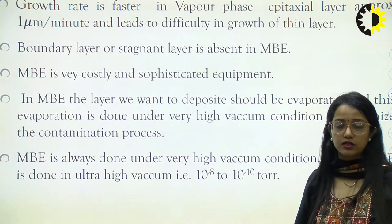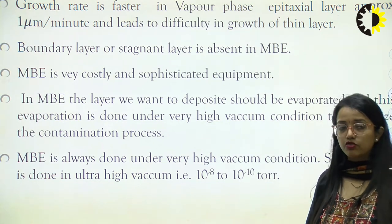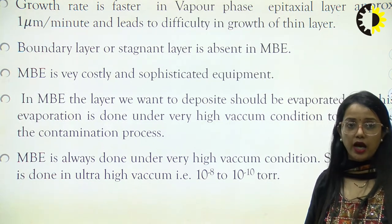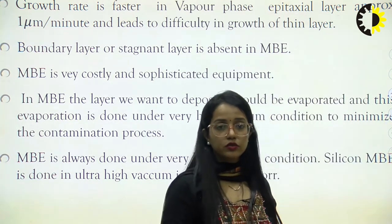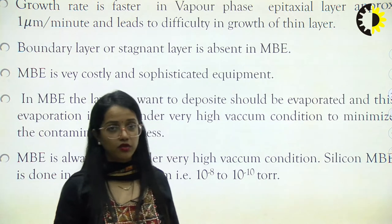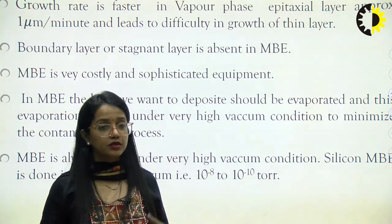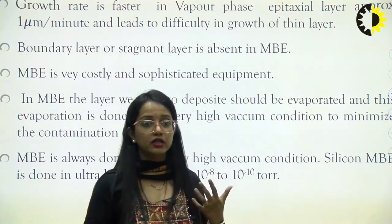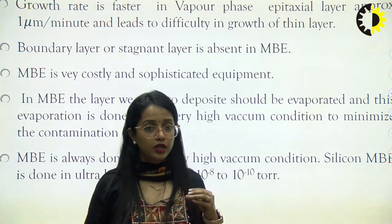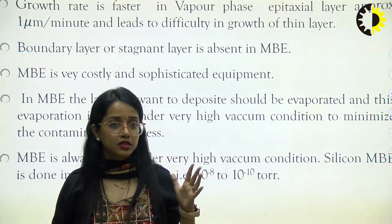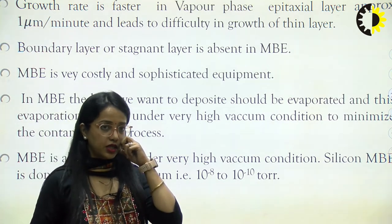The growth rate is faster in vapor phase epitaxy — approximately 1 micrometer per minute — and this leads to difficulty in the growth of thin layers. Since the growth is quite fast, it is difficult to precisely control and stop at a very thin layer. For a very small period of time the growth increases significantly, making it a big challenge to stop at a thin layer.